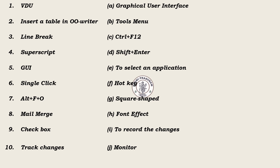Now match the following. Left side: 1. VDU, 2. Insert a table in OpenOffice Writer, 3. Line break, 4. Superscript, 5. GUI, 6. Single click, 7. Alt plus F plus O, 8. Mail merge, 9. Checkbox, 10. Track changes. Right side: Graphical user interface, Tools menu, Ctrl plus F12, Shift plus Enter, To select an application, Hard key, Square shaped, Font effect, To record the changes, Monitor.